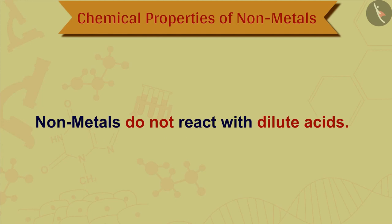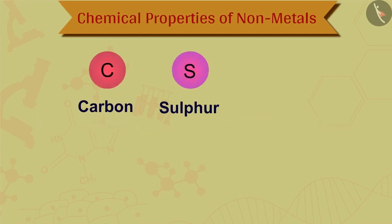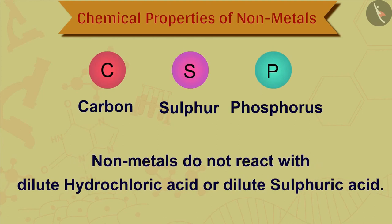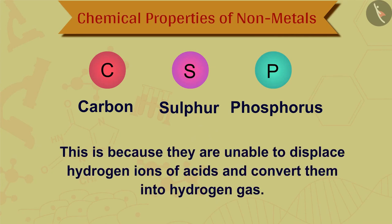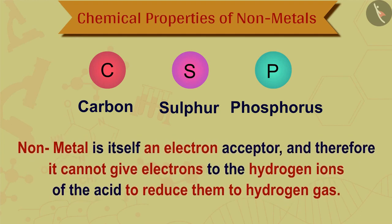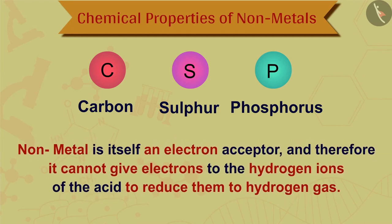For example, non-metals like carbon, sulfur and phosphorus do not react with dilute hydrochloric acid or dilute sulfuric acid. But do you know why non-metals do not react with dilute acids? This is because they are unable to displace hydrogen ions of acids and convert them into hydrogen gas. A non-metal is itself an electron acceptor, and therefore it cannot give electrons to the hydrogen ions of the acid to reduce them to hydrogen gas.